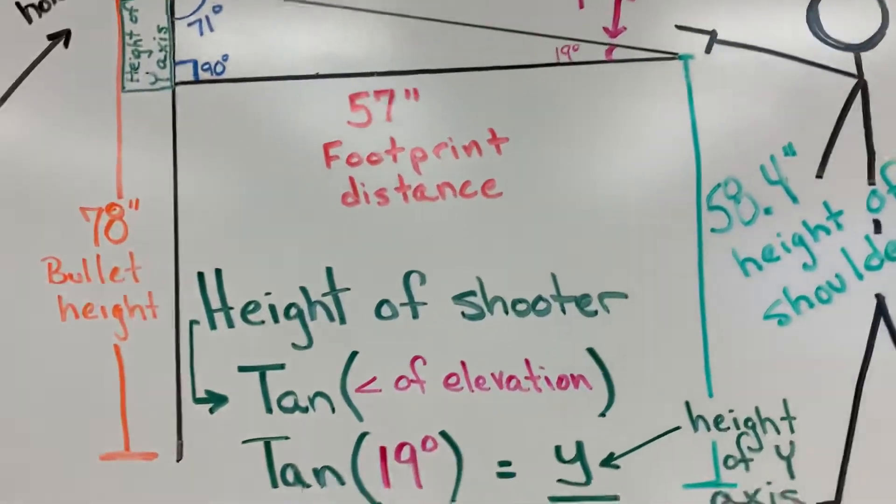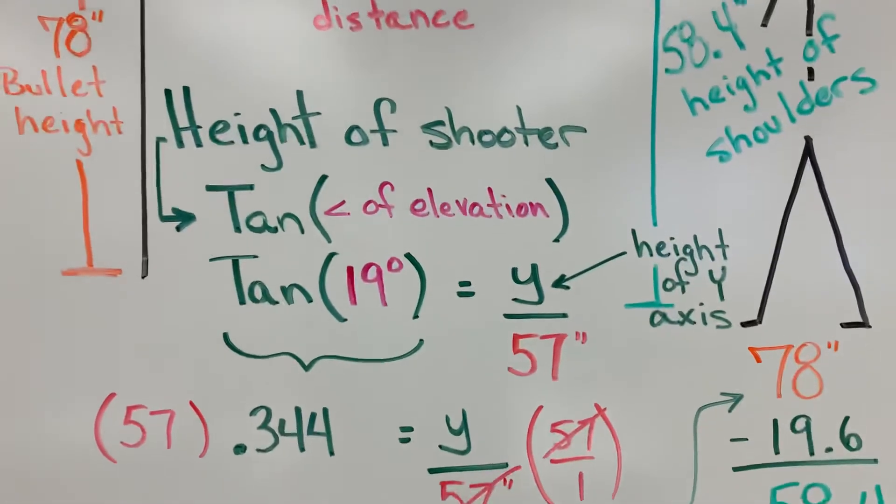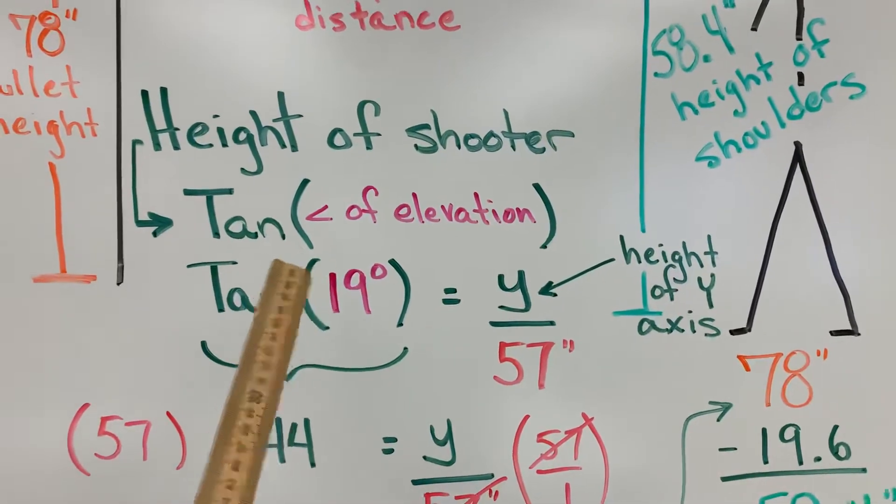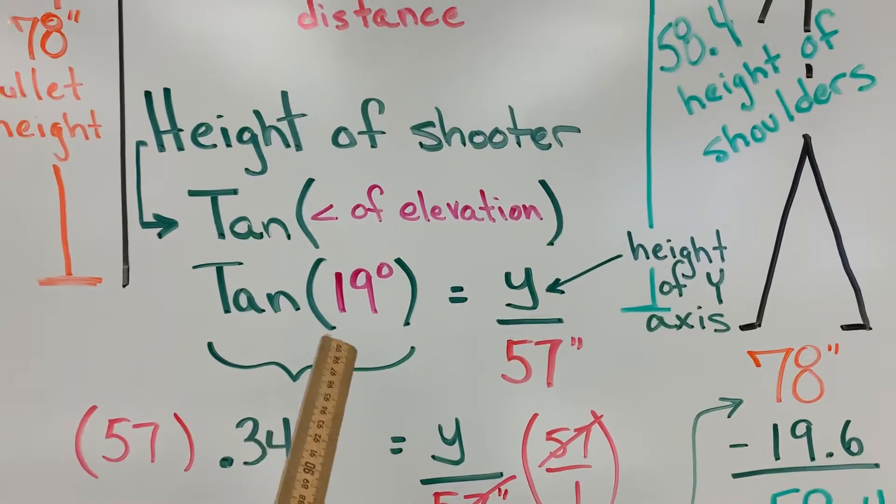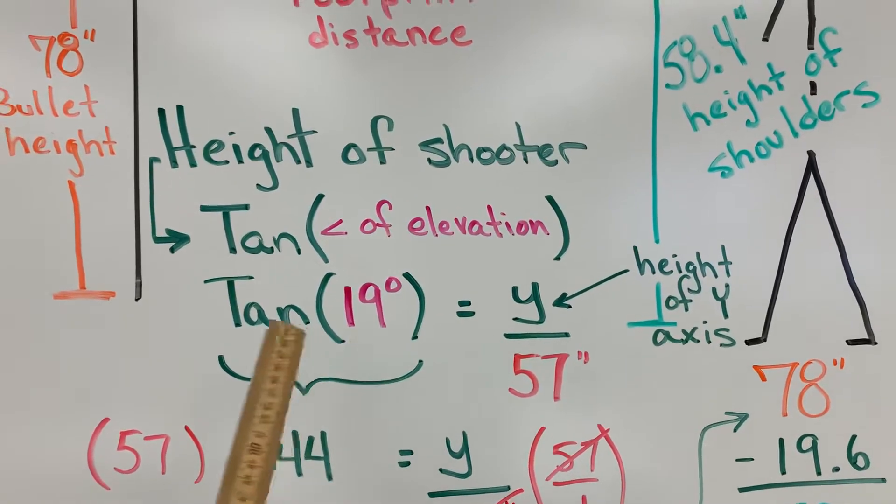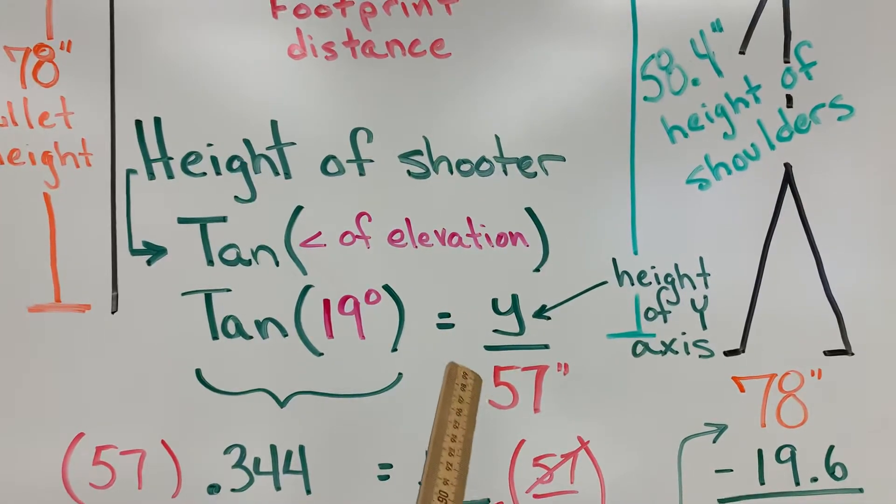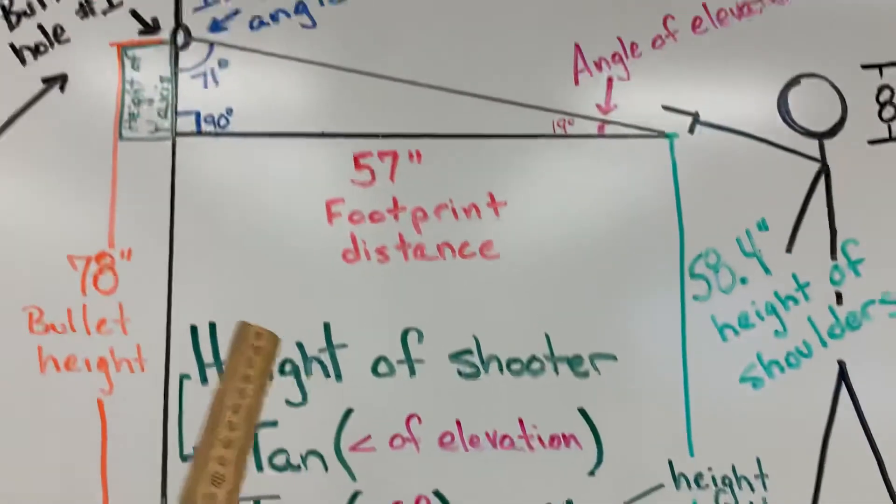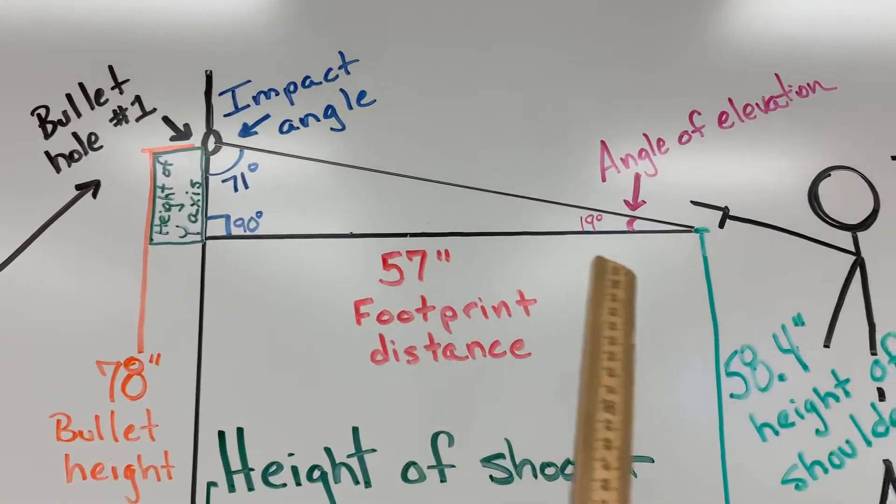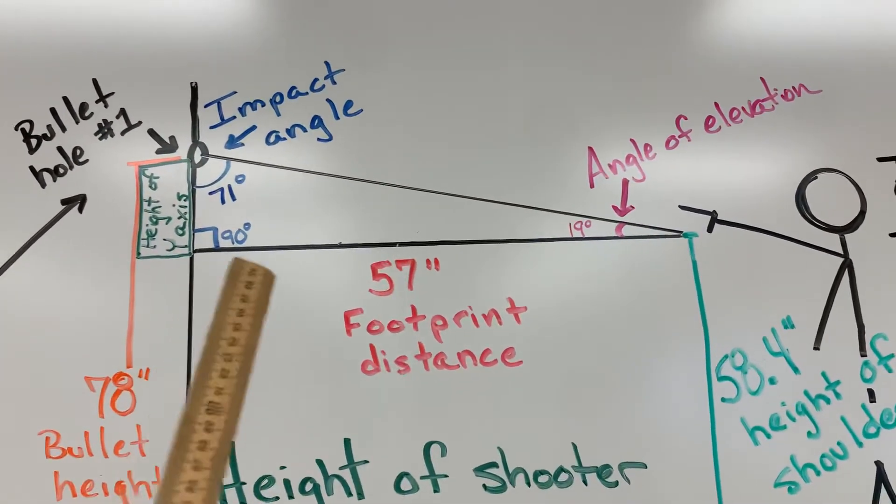So the next step is to figure out the height of that shooter. We have to take the tangent of the angle of elevation, which in this case was 19. And when we do that, that's going to equal Y over the distance the footprint was from the wall. In other words, the length of this leg of the triangle, 57 inches.